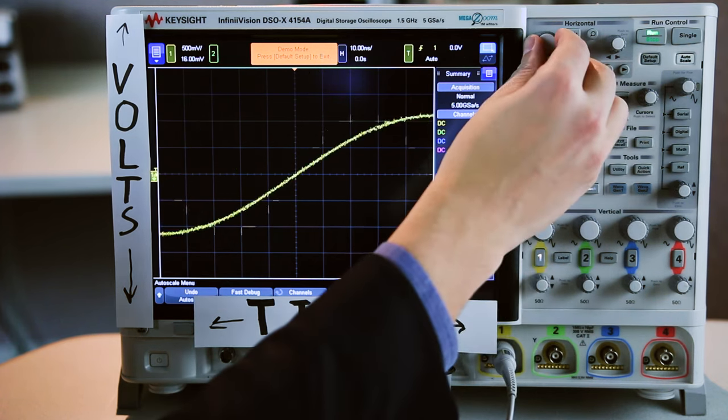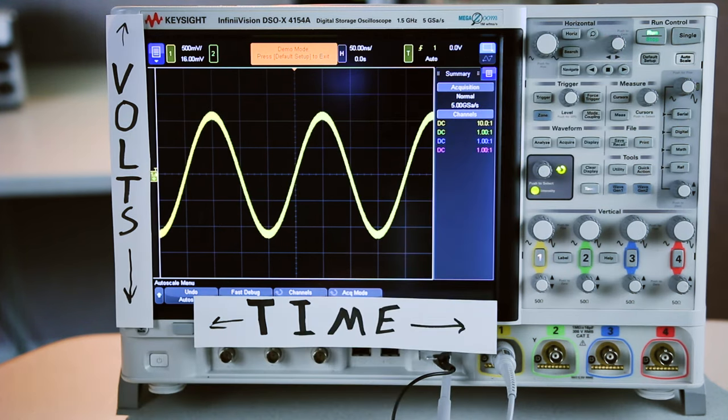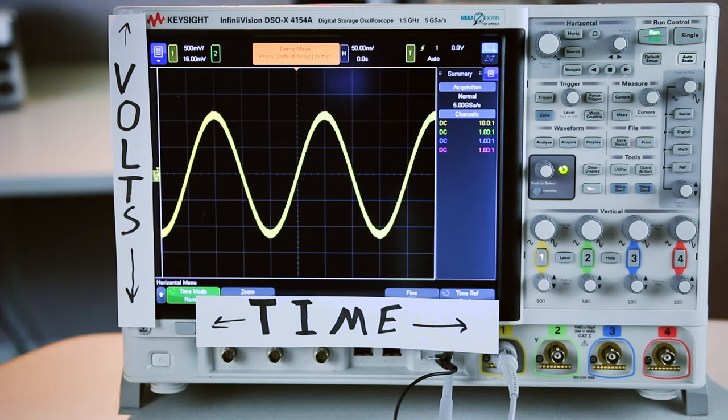When I turn this knob, I zoom in or zoom out over time. I can then use these knobs to see exactly which portions of the signal I want.